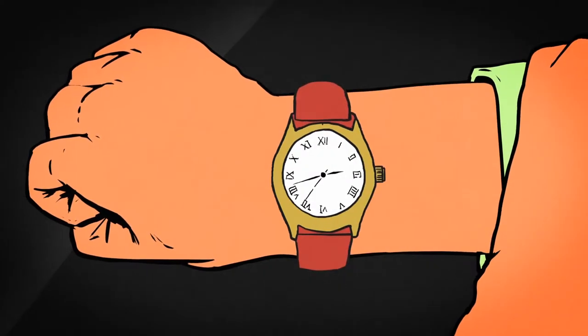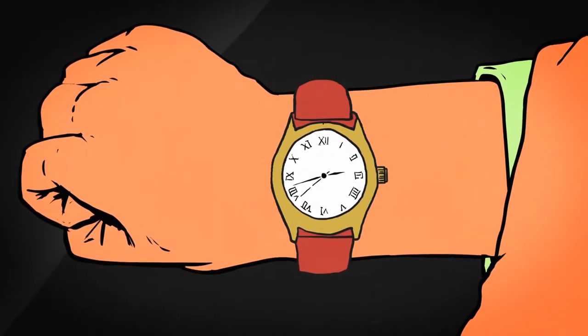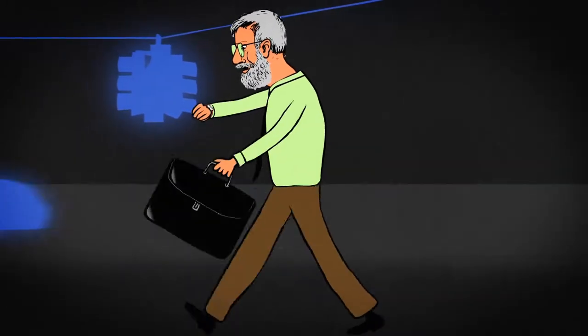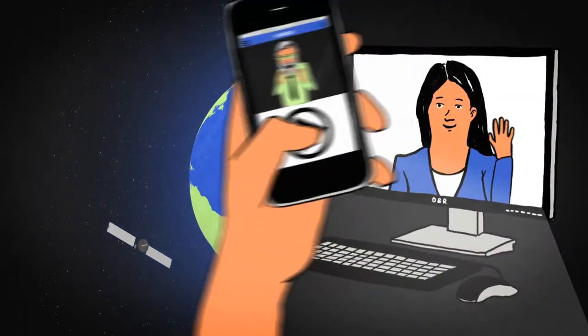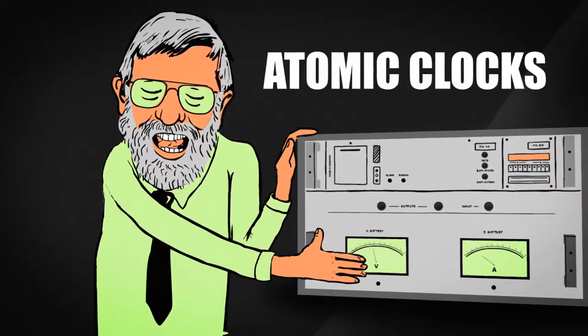Time is one of the most important things we measure in modern life, not to find our way to appointments, but to navigate through the global positioning system for high-speed synchronous communication. We need really precise timing, and the best kinds of clocks for doing that timing are atomic clocks.